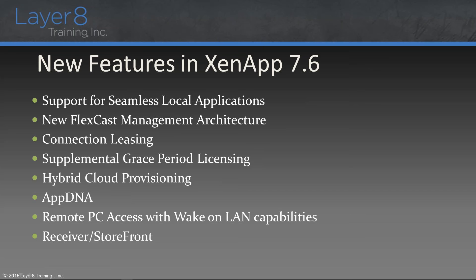We've got the FlexCast management architecture, which is pretty much the whole basis for the underlying architecture. We've gotten rid of the local host cache from XenApp 6.5 and now we're dealing with the FlexCast management architecture, which relies extensively on the SQL Server database for all activities. A new feature that came out with 7.6 is the connection leasing feature, part of the delivery controllers. This addresses concerns that XenApp 6.5 administrators had about not having a local host cache in the eventuality of a database outage. Connection leasing maintains a cache on the server holding previously brokered connections so that if the SQL Server database goes down, the system can continue to broker connections to resources on the back end.